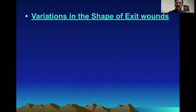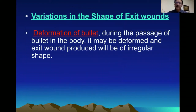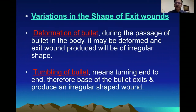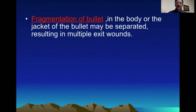Regarding variation in the exit wound: if the bullet is deformed during passage within the body, the exit wound produced will be irregular shaped — not circular or oval, but irregular because of the deformed bullet. The bullet may also tumble, meaning turning end-to-end so that the base is facing forward, and the bullet tries to exit from its base, again forming an irregular shaped wound. The bullet may also be fragmented by passage through hard material like bone; the jacket may be removed, or the bullet itself may be fragmented.